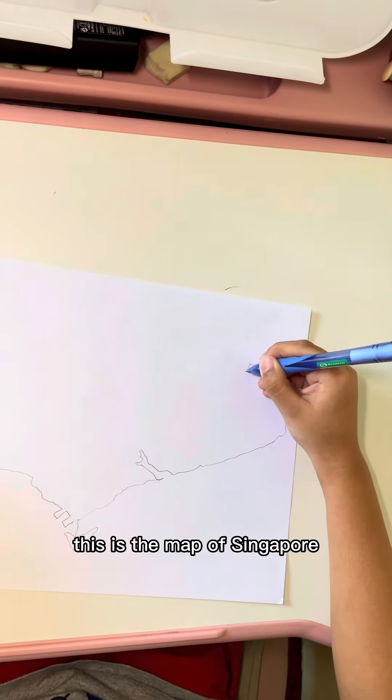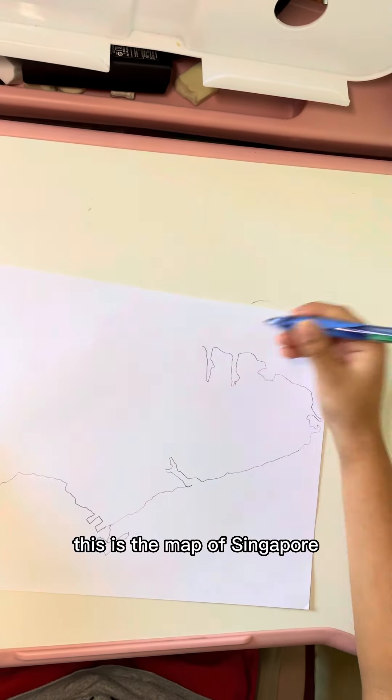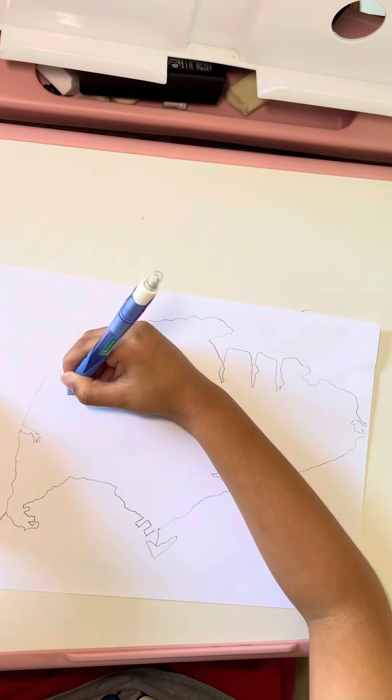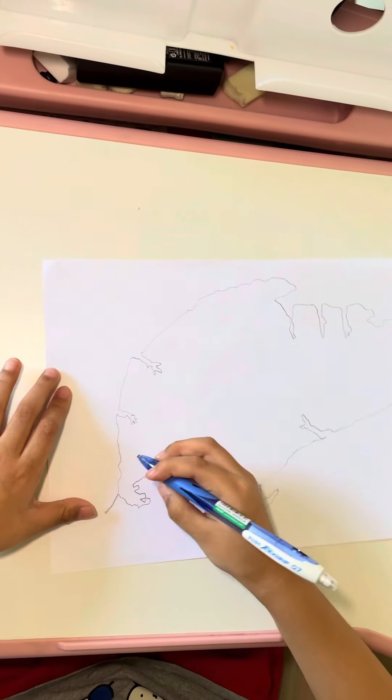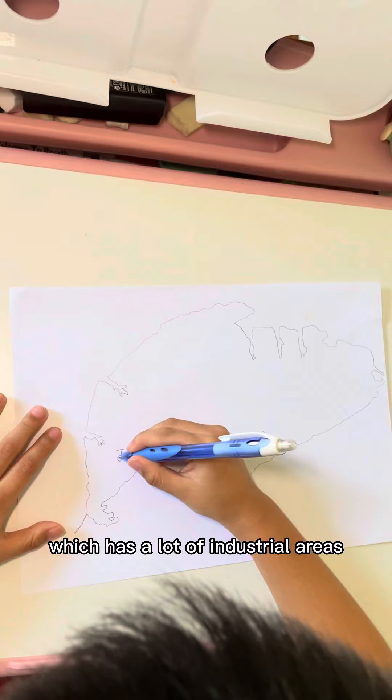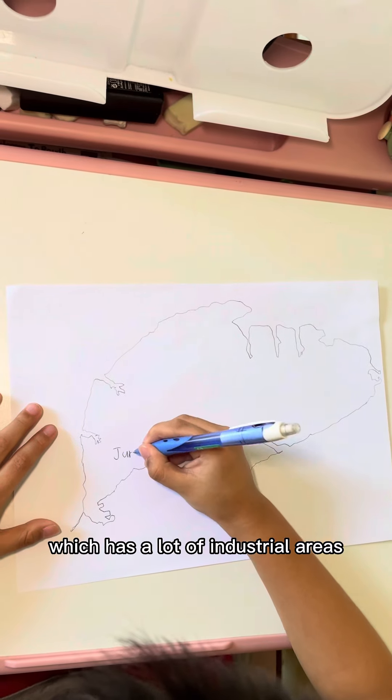This is the map of Singapore. On the west is Jurong which has a lot of industrial areas.